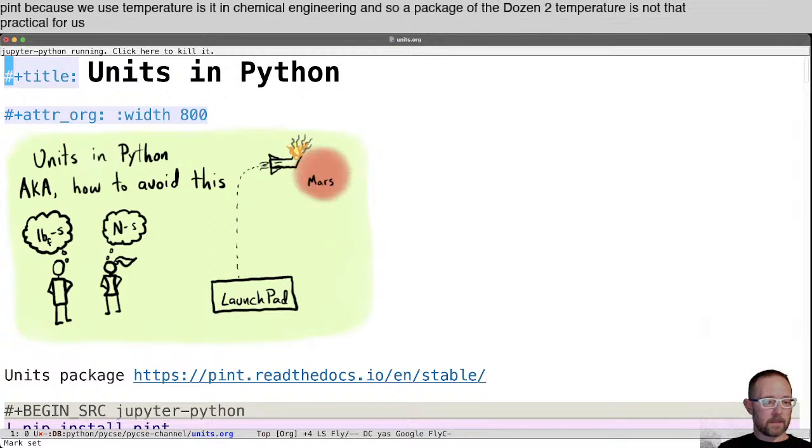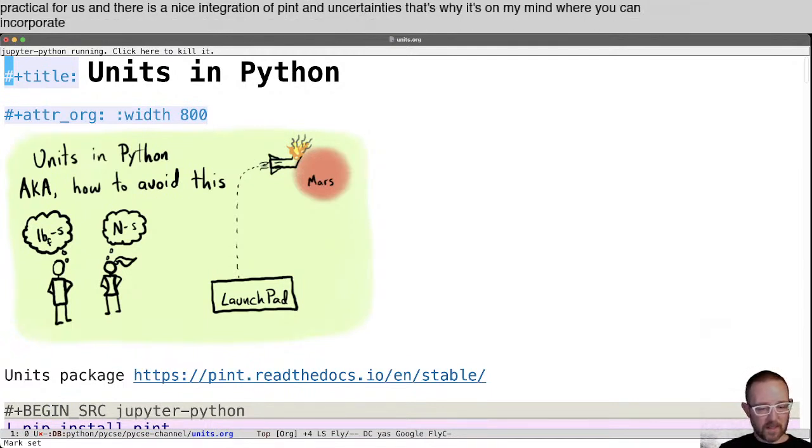And there is a nice integration of pint and uncertainties. That's why it's on my mind where you can incorporate units and uncertainties, but I will talk about that maybe another day.